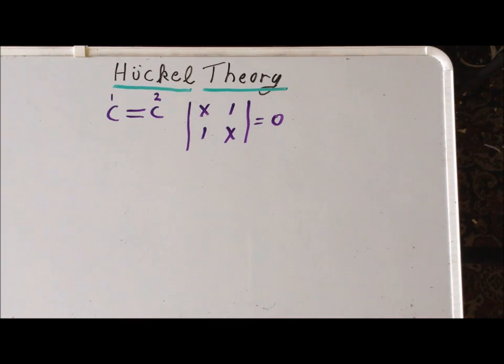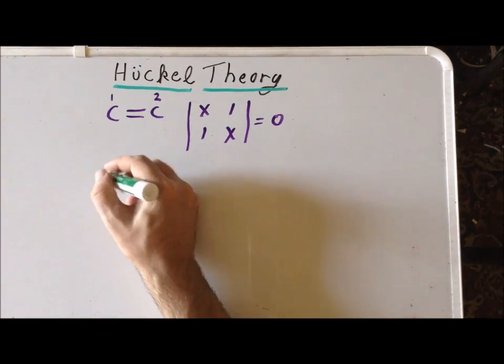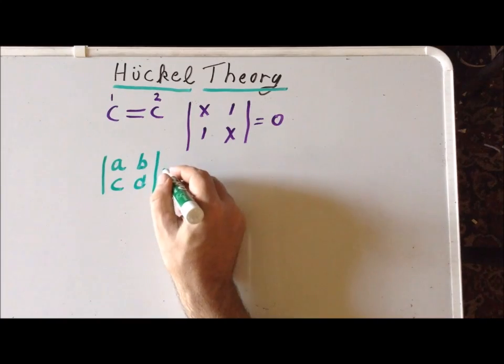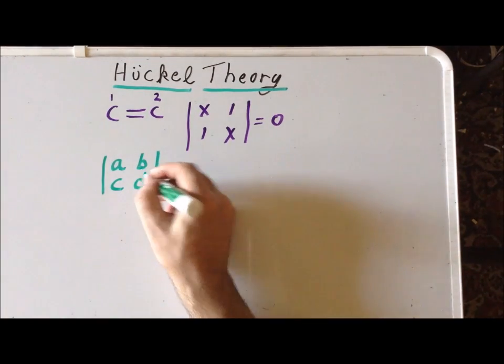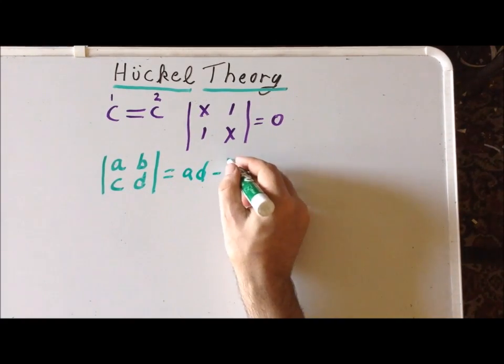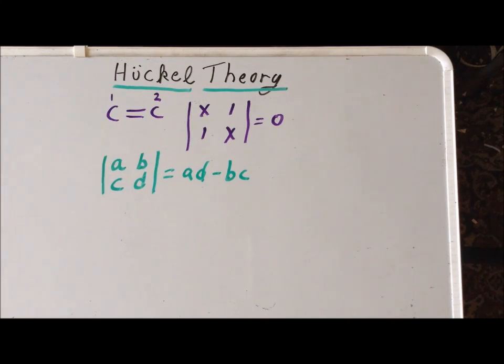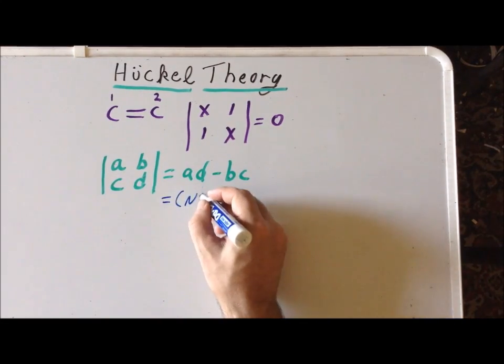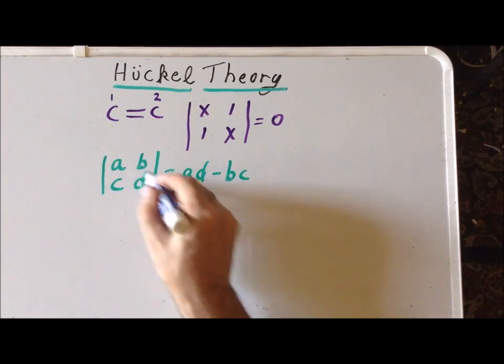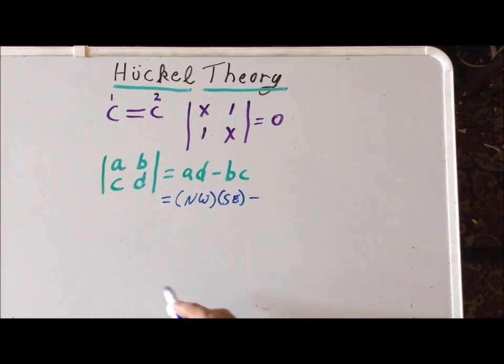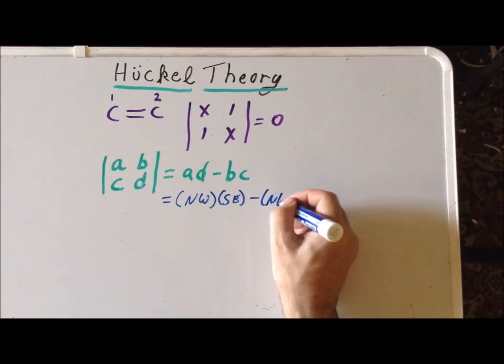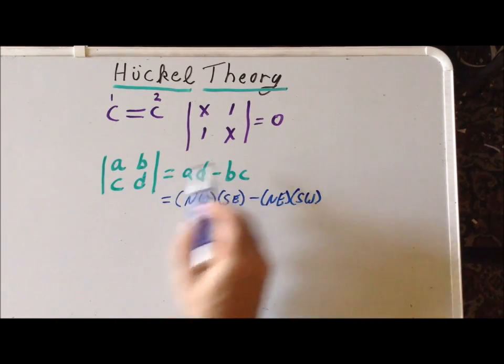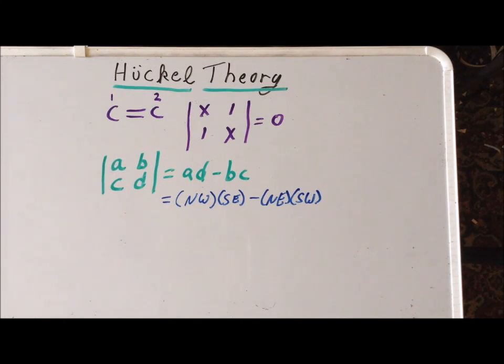For a 2 by 2 determinant with entries A, B, C, and D, this is by definition equal to AD minus BC. A nice way of thinking of this formula is the northwest entry times the southeast entry, minus the northeast entry times the southwest entry.